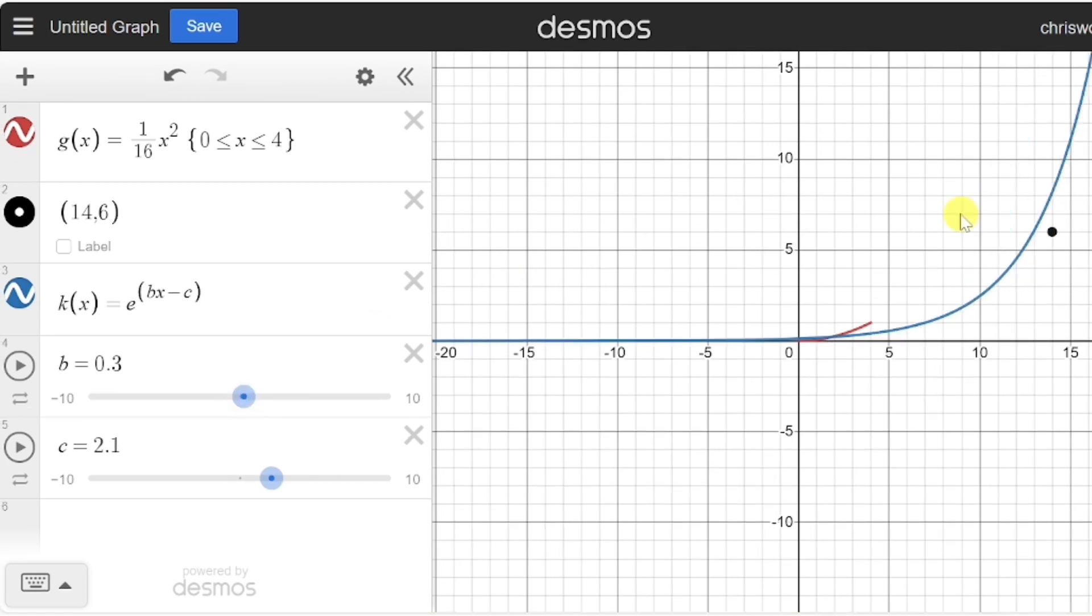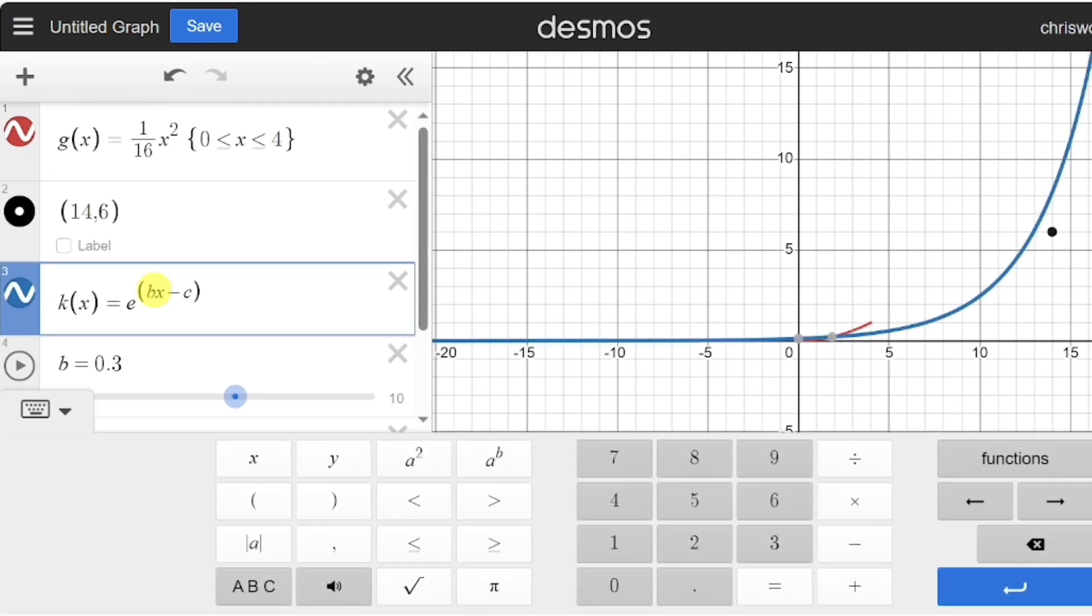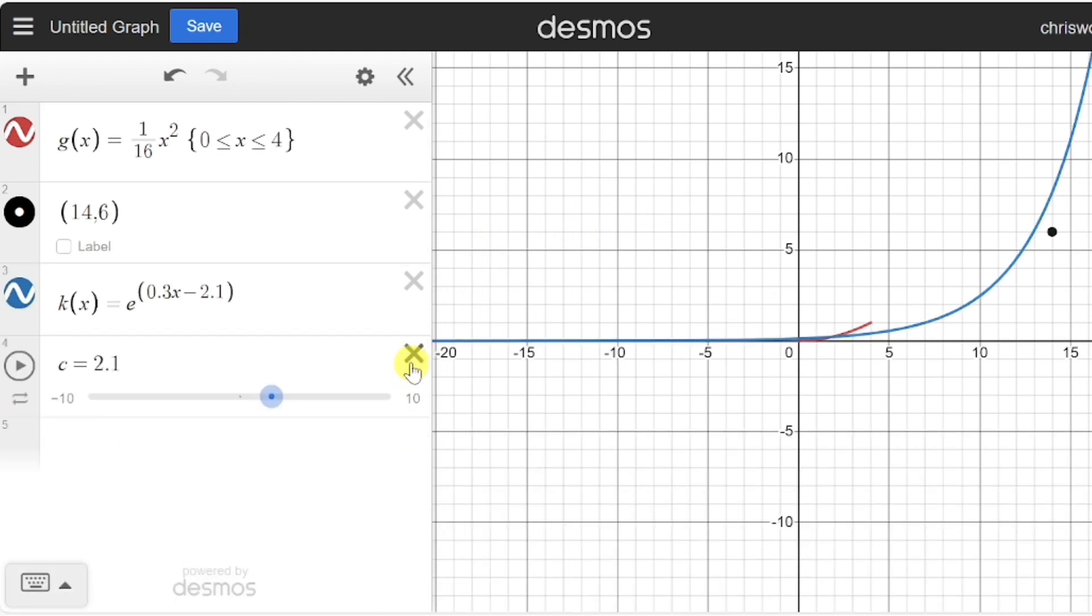Okay, so I'd say that this is getting pretty close. So what we're going to do now is change this b value to 0.3 and we're going to change our c value to 2.1. Then we can just remove these sliders.